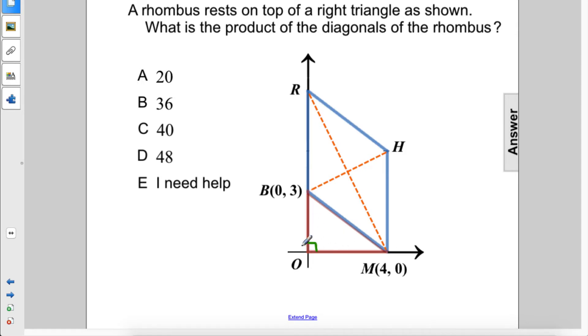Alright, so we have this right triangle. This length is three, this length is four, therefore the hypotenuse, or one side of this rhombus, is five, so all of the sides of the rhombus are five.